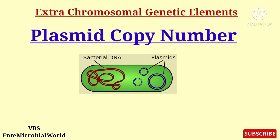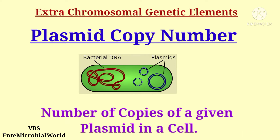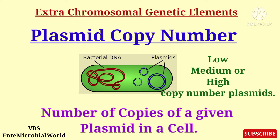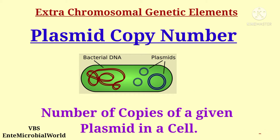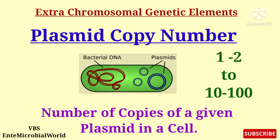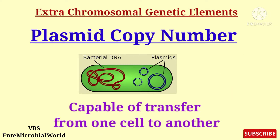The plasmid copy number is the number of copies of a given plasmid in a cell. Plasmids may be either low, medium, or high copy number plasmids. The number of copies of a plasmid per cell ranges from 1–2 to 10–100. Many classes of plasmids are capable of transfer from one cell to another.